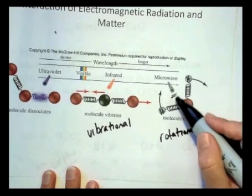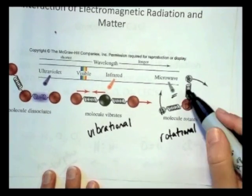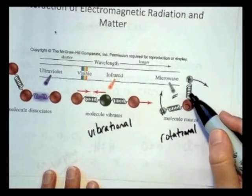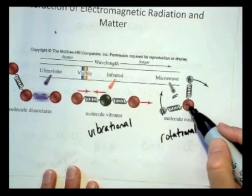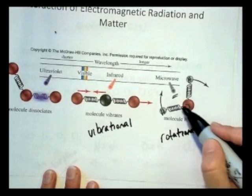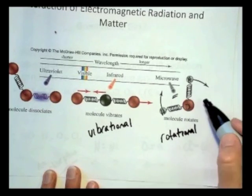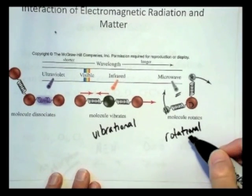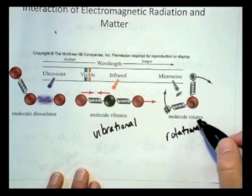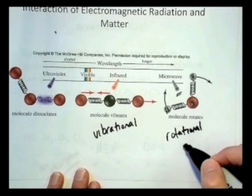So that rotation of the water molecules then rubs up against the other molecules that it's around. And that rubbing is like friction, and it increases the heat, increases the temperature of the surroundings. So that's why things with a lot of water will heat up nicely in the microwave, and things that don't have a lot of water won't, because it's the water that you're affecting.